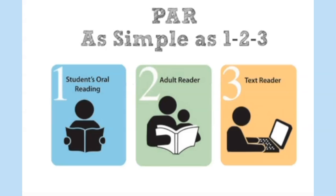The PAR helps identify areas of success and areas of need. Maybe the text-to-speech is providing access through decoding for the student, but the student still lacks certain comprehension strategies to access grade-level materials. You might identify that they independently read at a first-grade level, can comprehend with an adult reader at a third-grade level, and with text-to-speech they're able to access it at a third or fourth-grade level — it really helps you compare the student to themselves using different interventions.